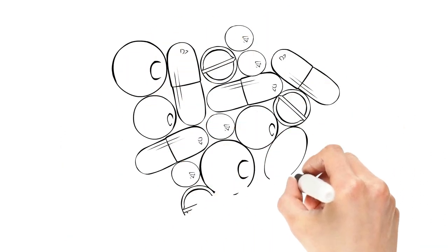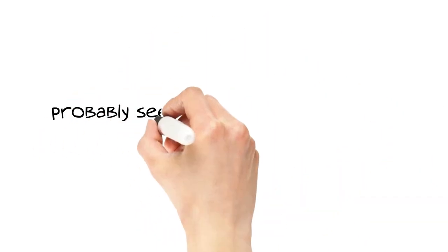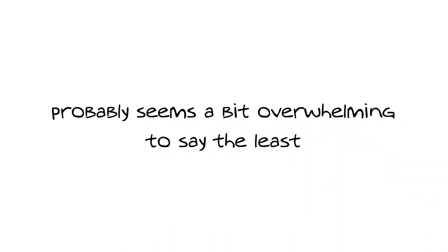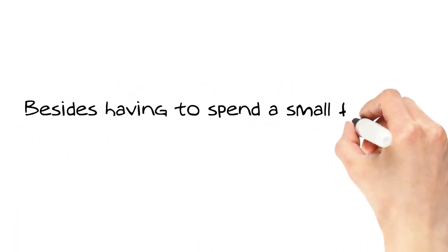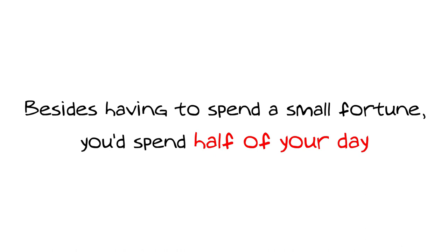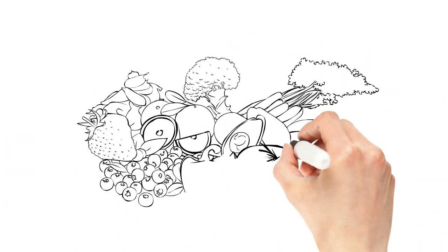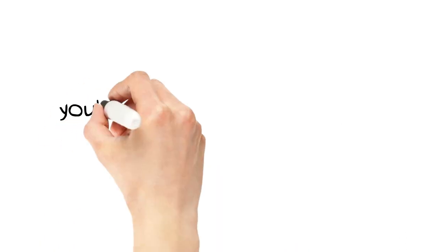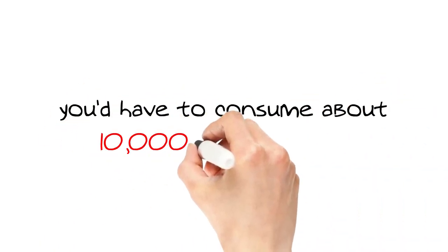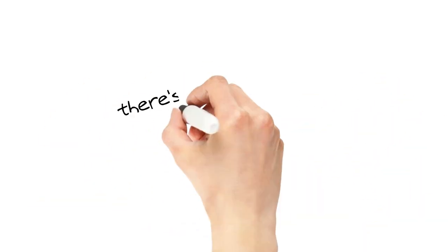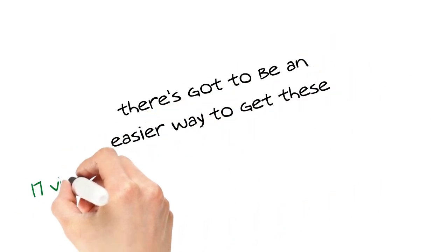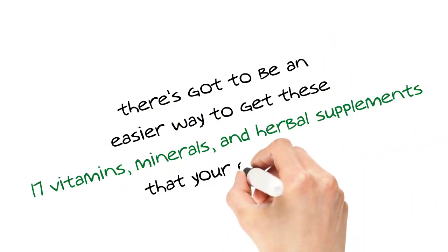Now the thought of trying to take a pill for each of these nutrients probably seems a bit overwhelming to say the least. Besides having to spend a small fortune, you'd spend half of your day doing nothing but swallowing pills. And if you tried to get adequate amounts of these nutrients in your diet, you'd have to consume about 10,000 calories a day. So there's got to be an easier way to get these 17 vitamins, minerals, and herbal supplements that your eyes need, right? Now pay close attention.